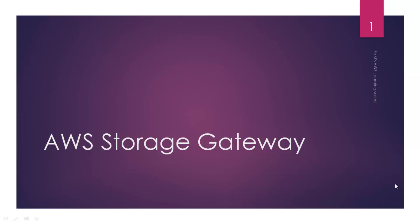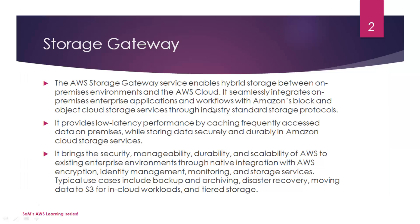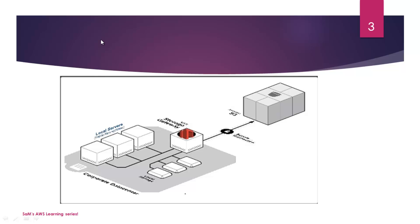AWS Storage Gateway is an offering from AWS that enables hybrid storage between on-premises environments and the AWS cloud. It connects on-premises software appliances with cloud-based storage. Every organization has their own data center with servers and storage. Storage Gateway is essentially a virtual machine image deployed to the data center itself, acting as a bridge between your data center and AWS cloud storage solutions such as S3 and Glacier.